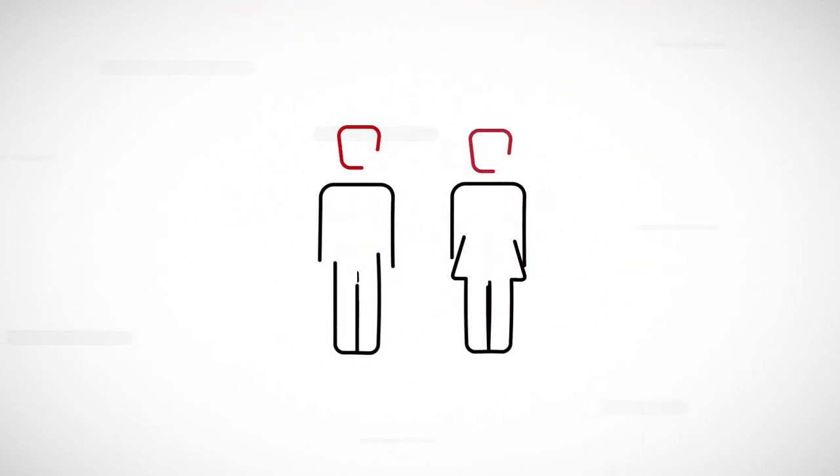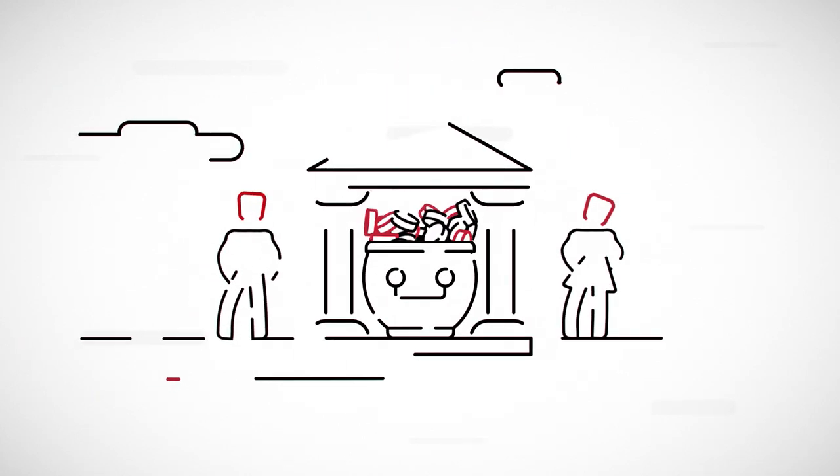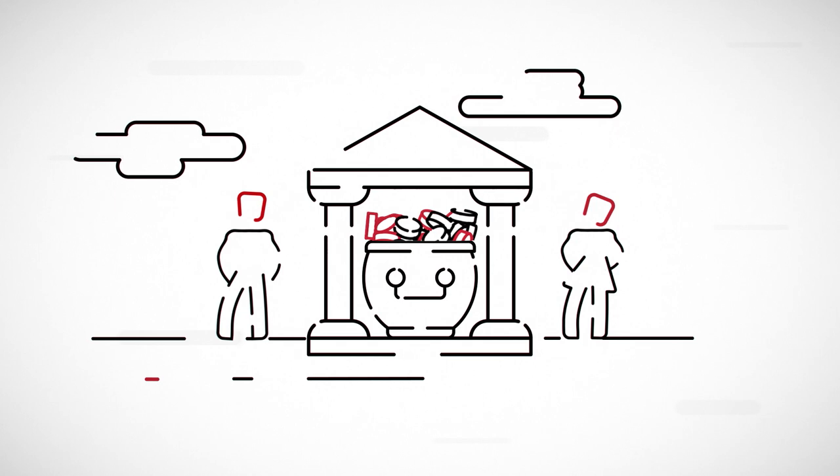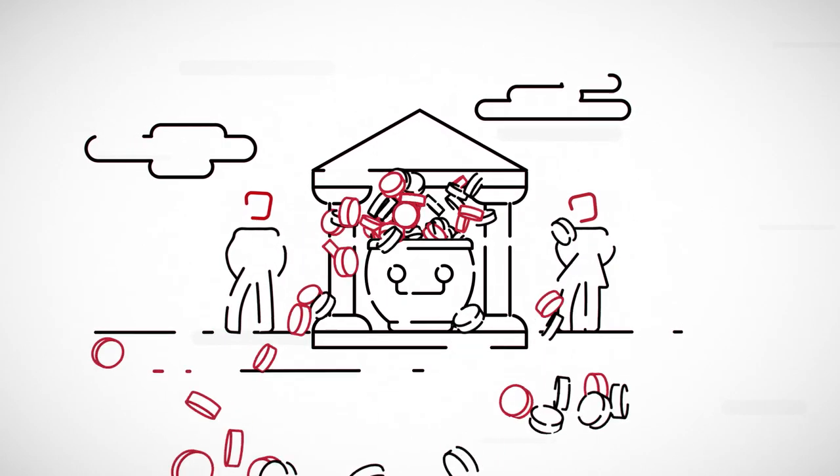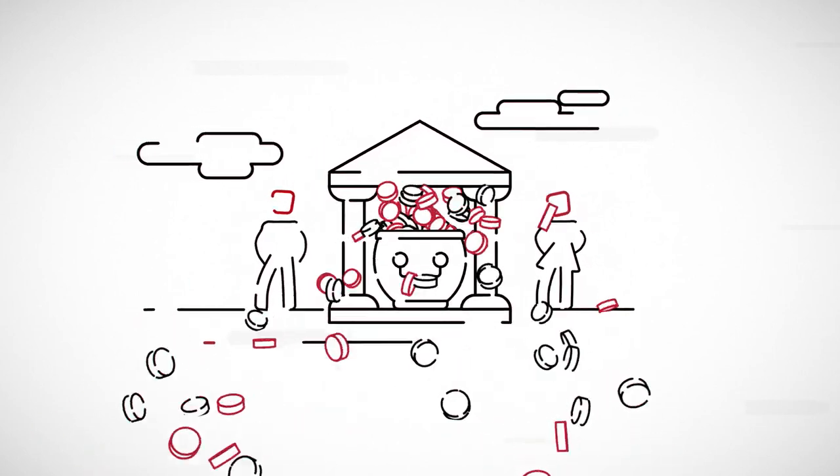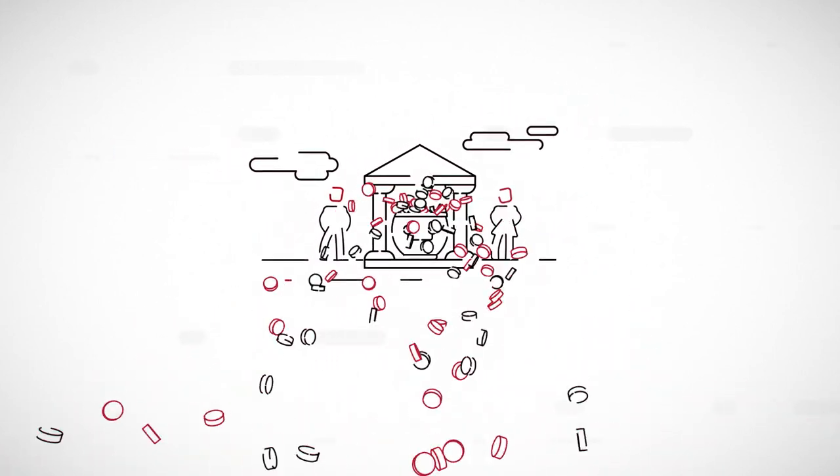Before you set off, make sure that you have a pot of cash for emergencies tucked away in a bank or building society account so you can get at it when you need to. Once you have enough cash set aside, you may decide to invest for the longer term, taking on more risk in the hope of better returns.